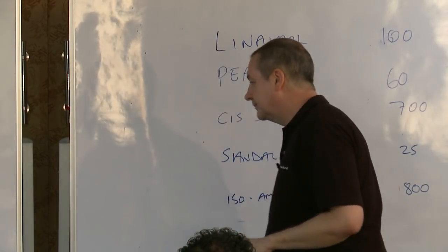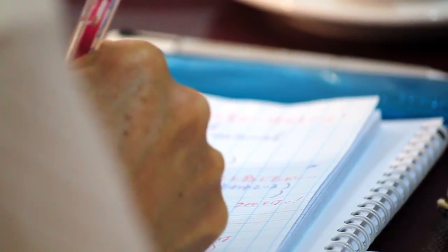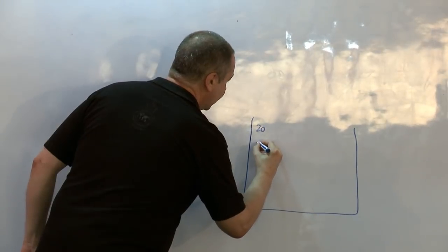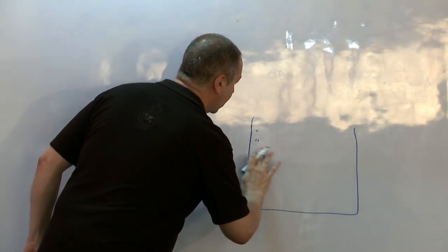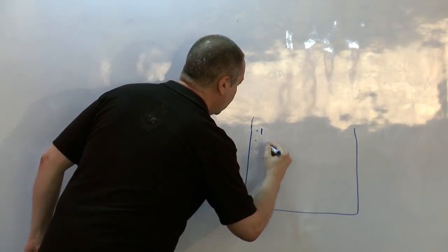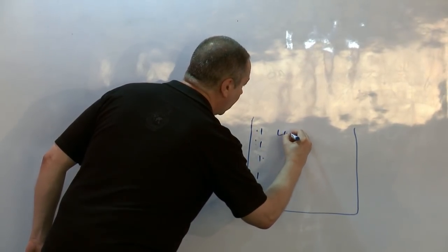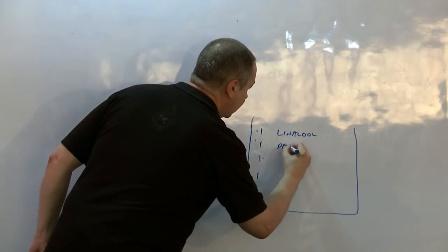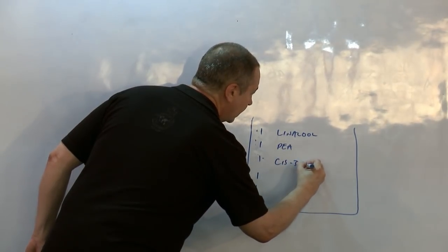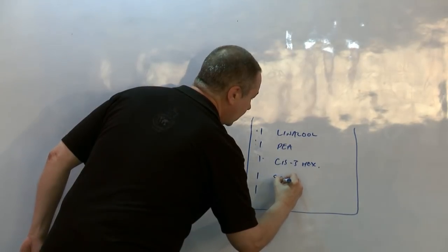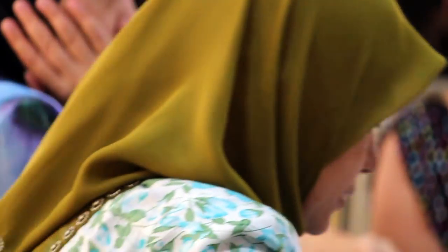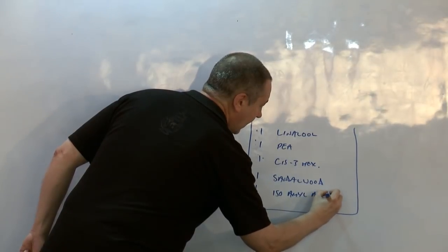So let's say I got myself a little beaker, a little pot, and I put 20% of one, one, one, one, and one of linalol, PEA, cis-3-hexanol, sandalwood, and isoamyl acetate.